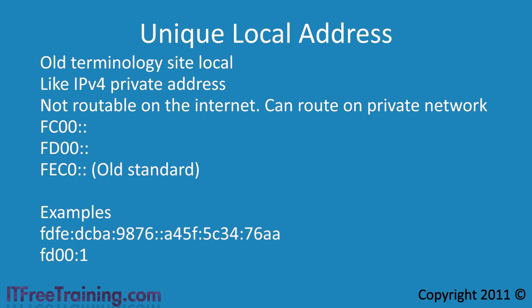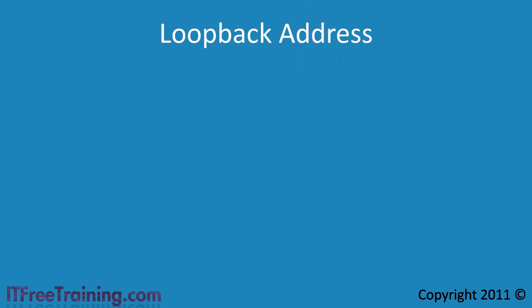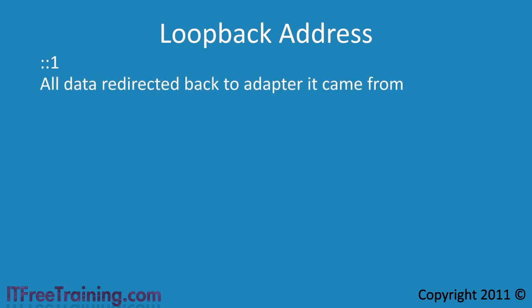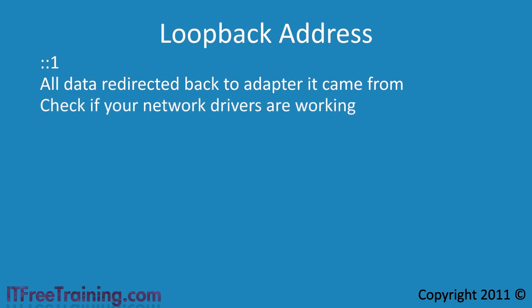There is one more IP address you may come across and that is the loopback address. In IP version 6, this is represented by ::1. If you attempt to connect to or send data to this address, it will be redirected back to the local network card. The loopback address is primarily used to check if your network card and its software are running. It will not test if you can send data on the network, because the loopback address still works even if the network cable is not plugged in.